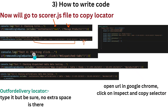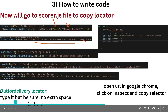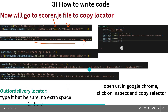For 'browser.click', you can see 'checking click' — click on 'dispatch-tab'. Give this value without double quotes or slashes. Copy and paste all details from scorer.js into app.test.js. For the 'out for delivery' locator which may not appear in scorer.js, you can use the code provided, or open the URL in Chrome, inspect it, and copy the selector. Follow the code carefully.